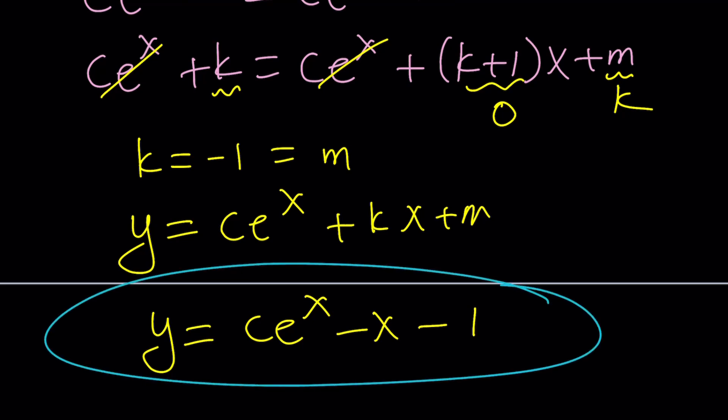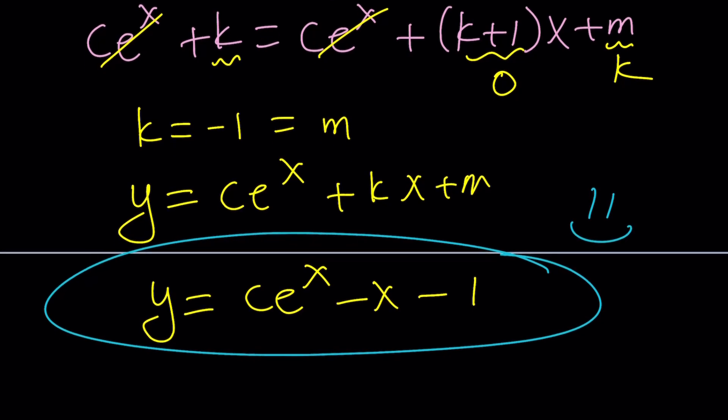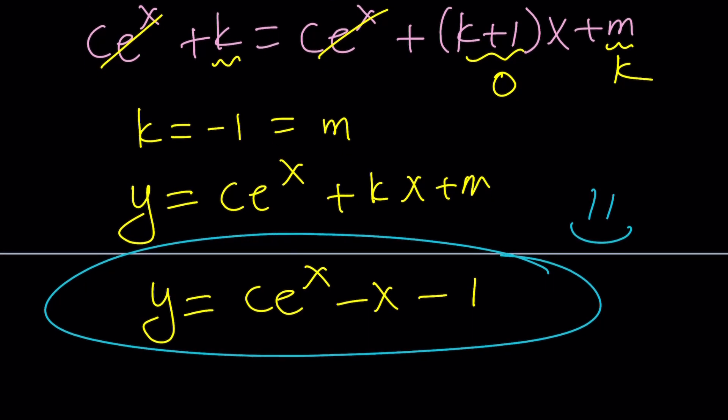Both methods give the same answer — y equals c times e to the x minus x minus 1. That brings us to the end of the video. Thanks for watching. I hope you enjoyed it. Please comment, like, and subscribe. I'll see you next time. Until then, be safe. Take care. I apologize that this was a long video, but I hope you enjoyed it. Bye-bye.